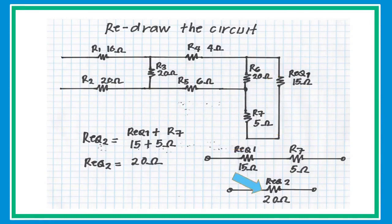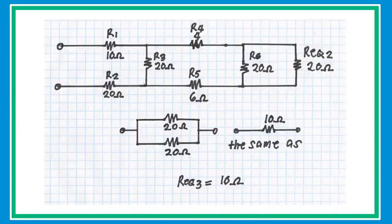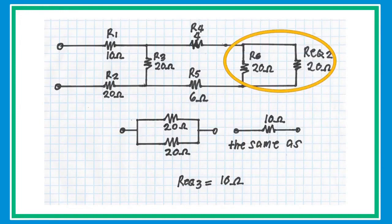After obtaining that answer, collapse and redraw the circuit. In the new redrawn circuit, R6 (20 ohms) and R_equivalent (20 ohms) are connected in parallel with the same value, so take half to get an equivalent resistance of 10 ohms.